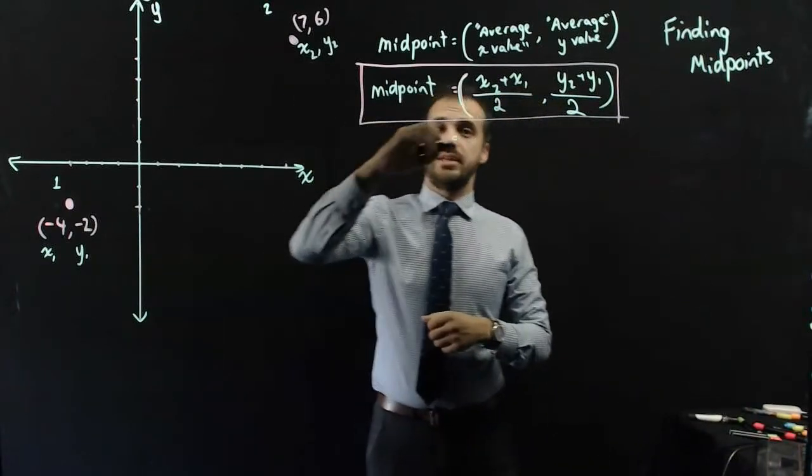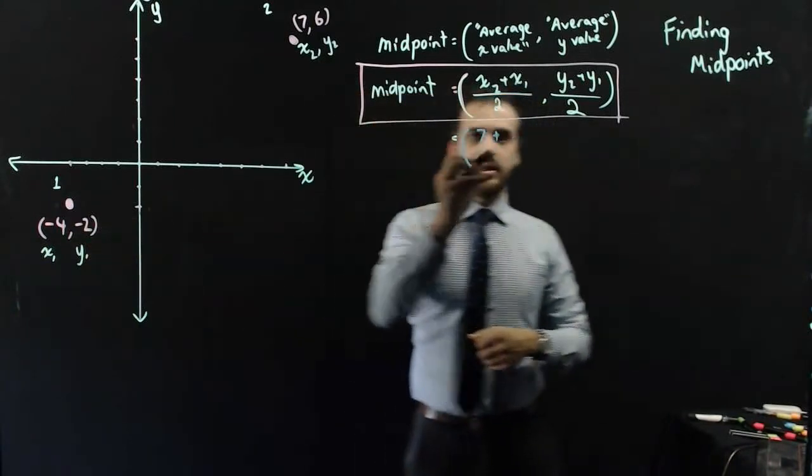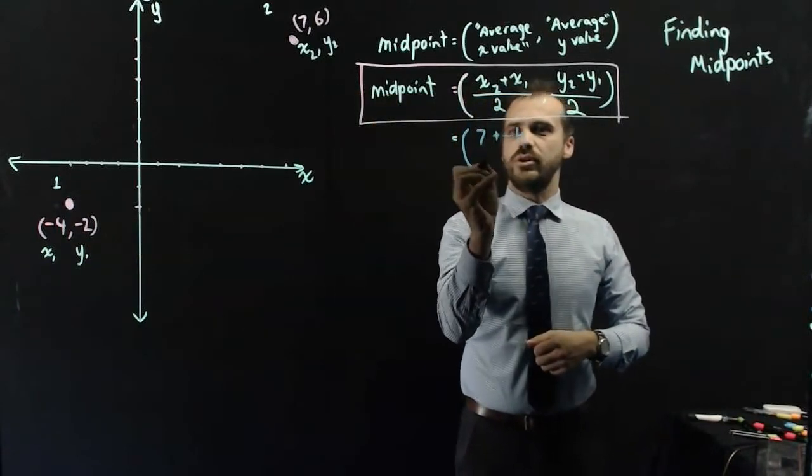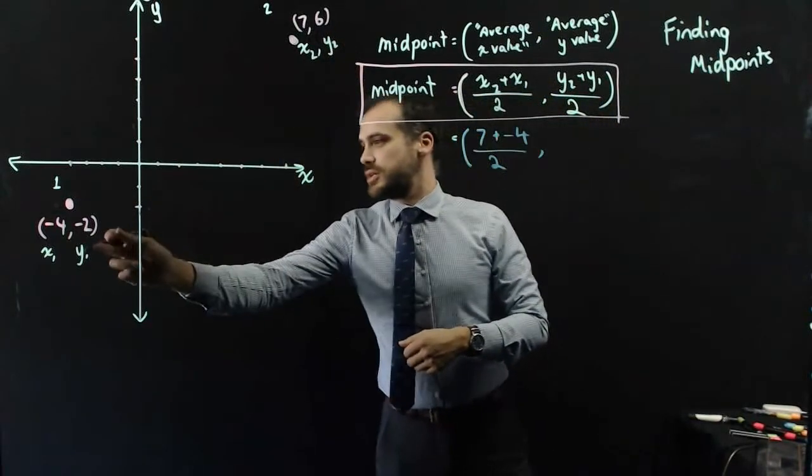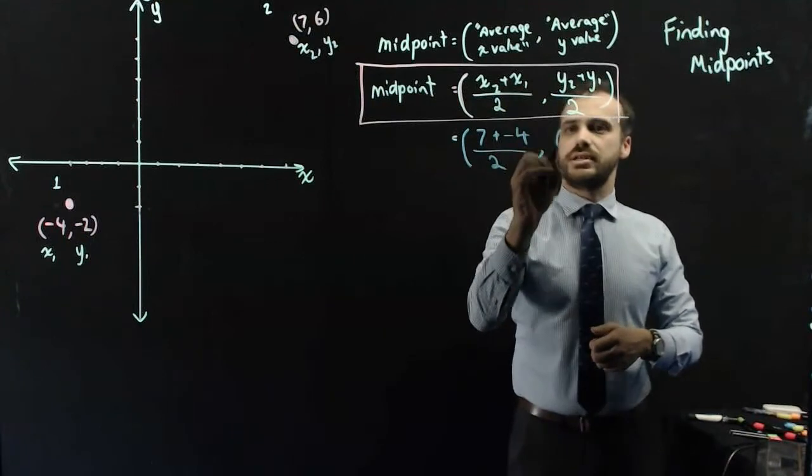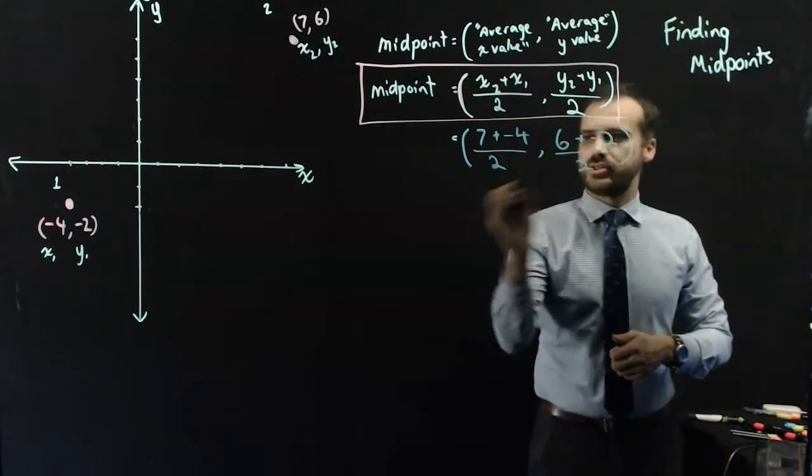x2 is 7, and x1 is negative 4, so 7 plus negative 4, all over 2. And y2 is 6, y1 is negative 2, so 6 plus negative 2, all over 2.